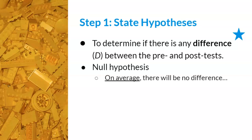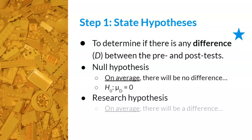Since we're calculating the average of the difference scores, the notation will reflect this difference. In notation, it will be mu subscript d, where 'd' stands for difference scores. If there's no difference between the pre-test and post-test scores once the average is calculated, then mu d will always equal zero — meaning if there truly is no difference between the first and second score, it will average out to zero. The research hypothesis will reflect the wording 'on average' as well, and in notation, if there is a difference, the average will not equal zero. This step typically confuses students, so just keep practicing.